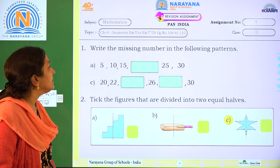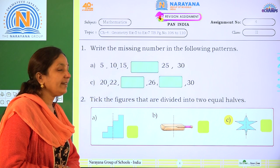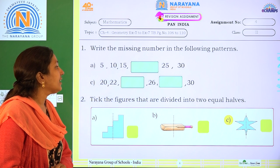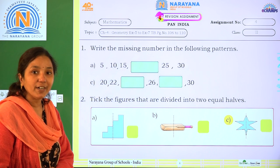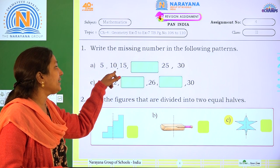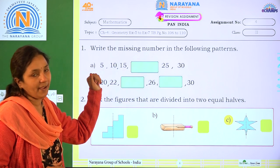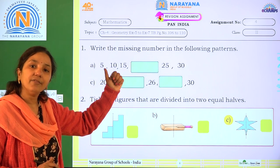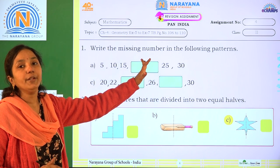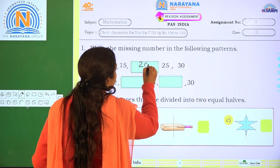Coming to the first one: write the missing numbers in the following patterns. What is given here? 5, 10, 15, dash, 25, 30. So what is the missing number here? You can observe: 5, then 10, then 15. What is the difference between 5 and 10? It's 5. Again 10 and 15, difference is 5. So if you add 15 plus 5, what do you get? 20. So the missing number is 20.